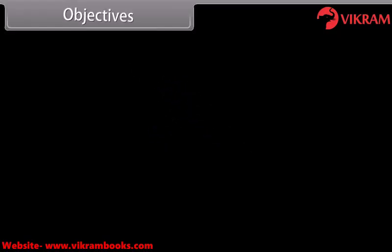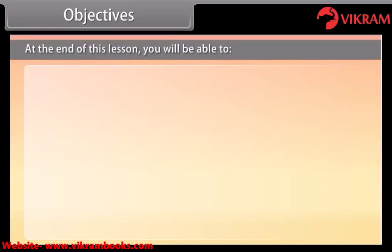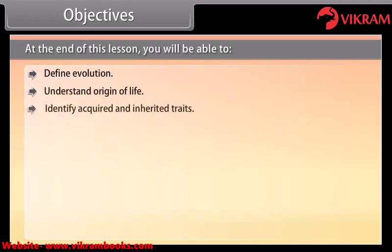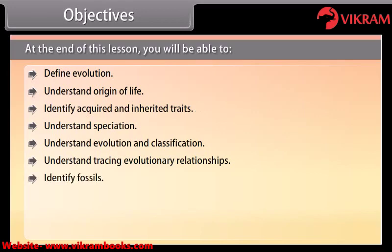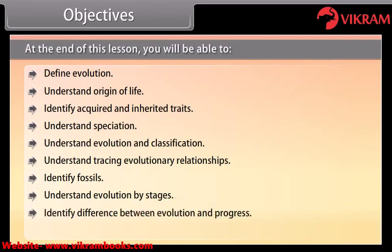At the end of this lesson, you'll be able to: define evolution, understand origin of life, identify acquired and inherited traits, understand speciation, understand evolution and classification, understand tracing evolutionary relationships, identify fossils, understand evolution by stages, identify the difference between evolution and progress, and understand the process of human evolution.